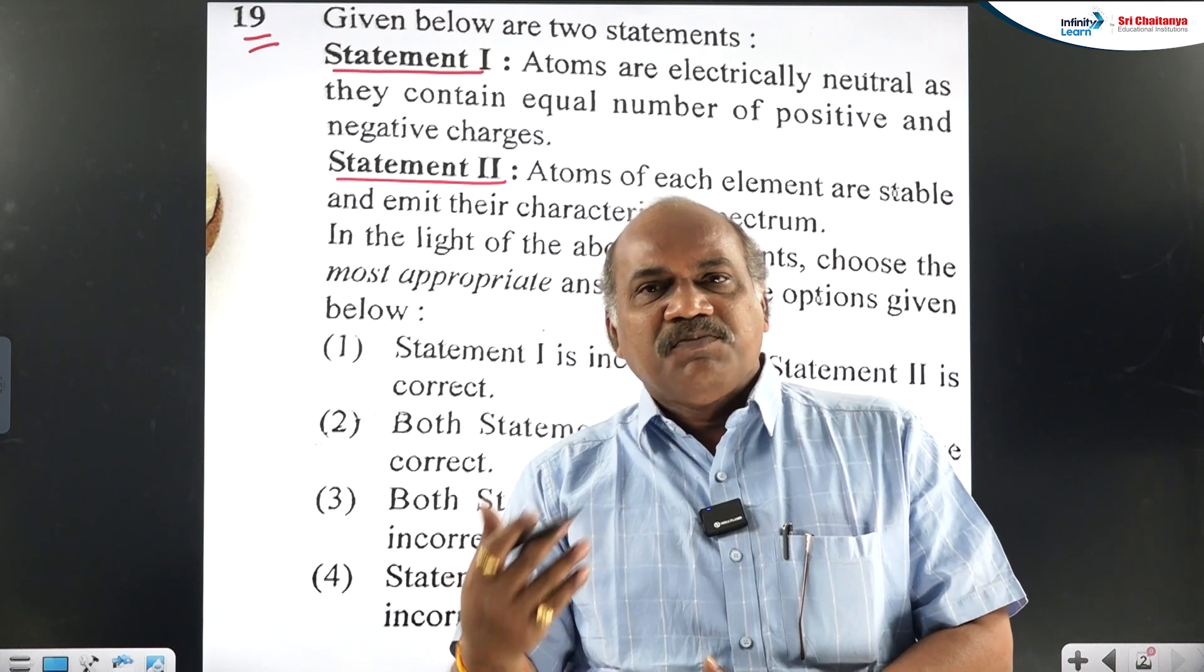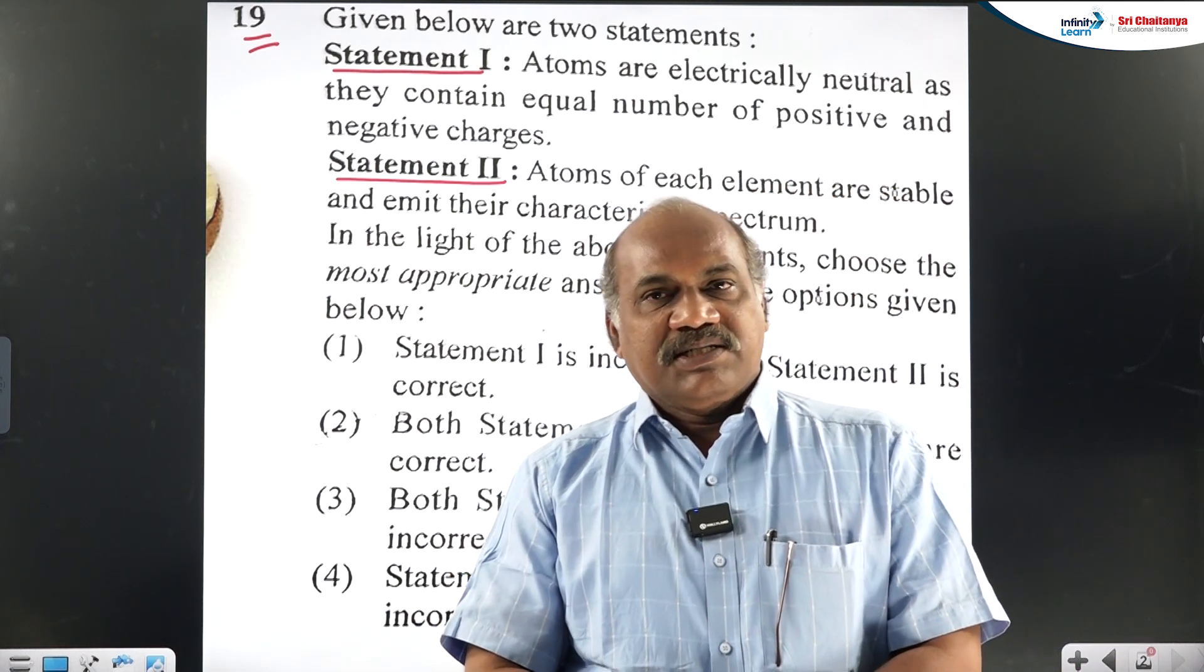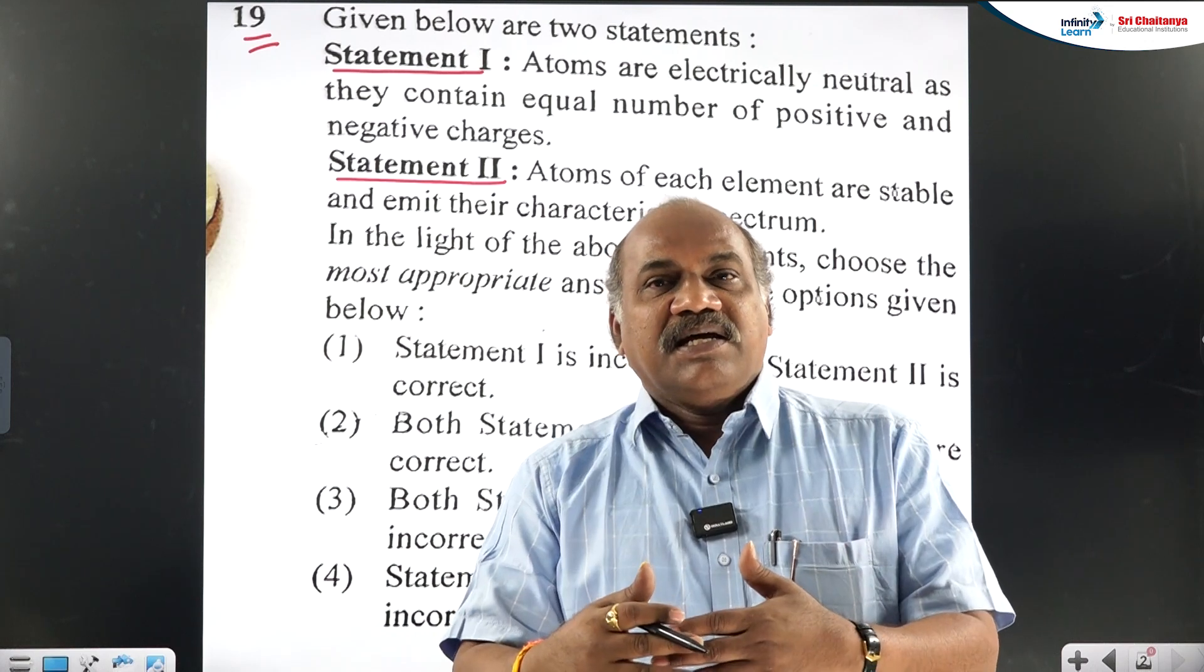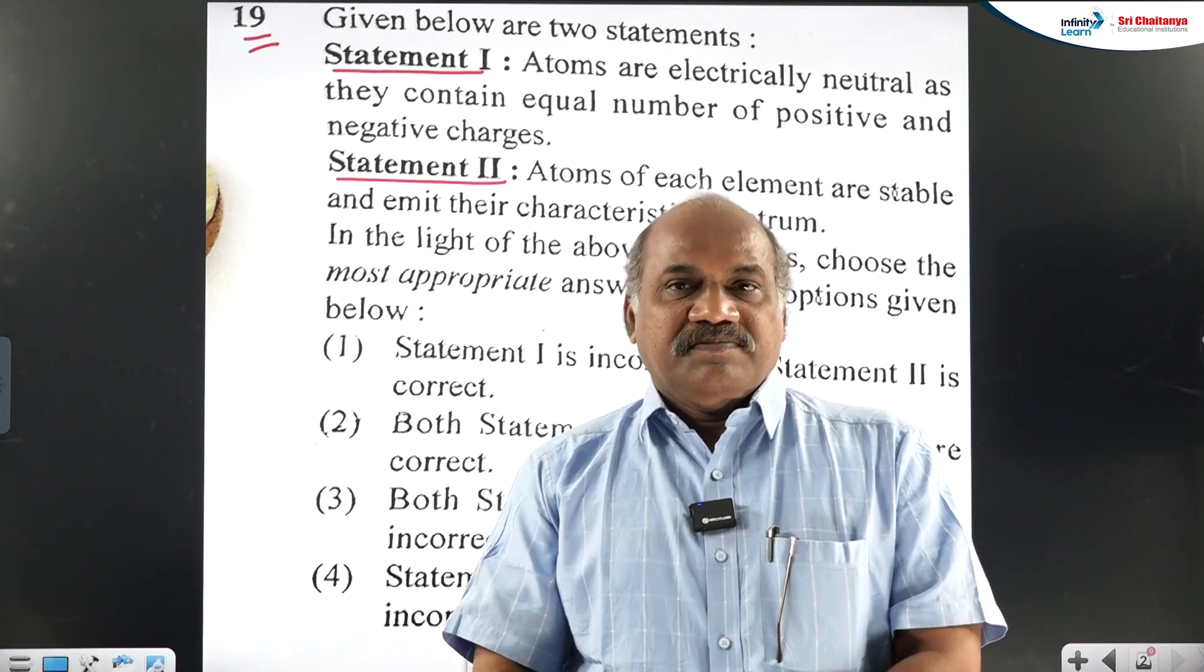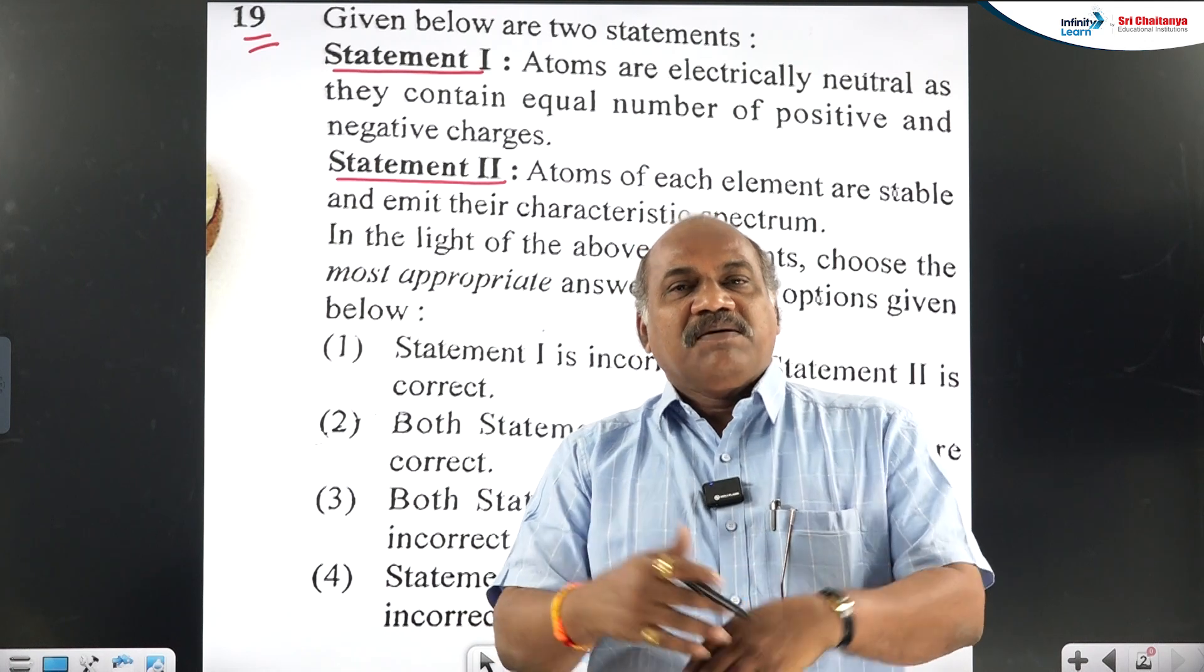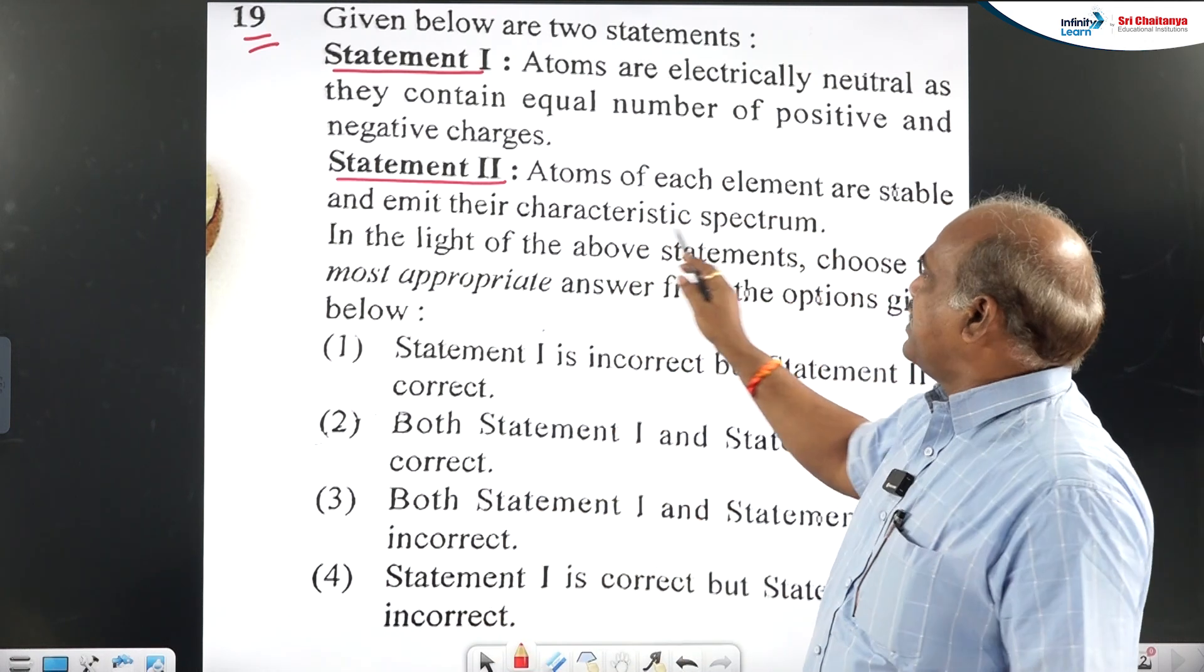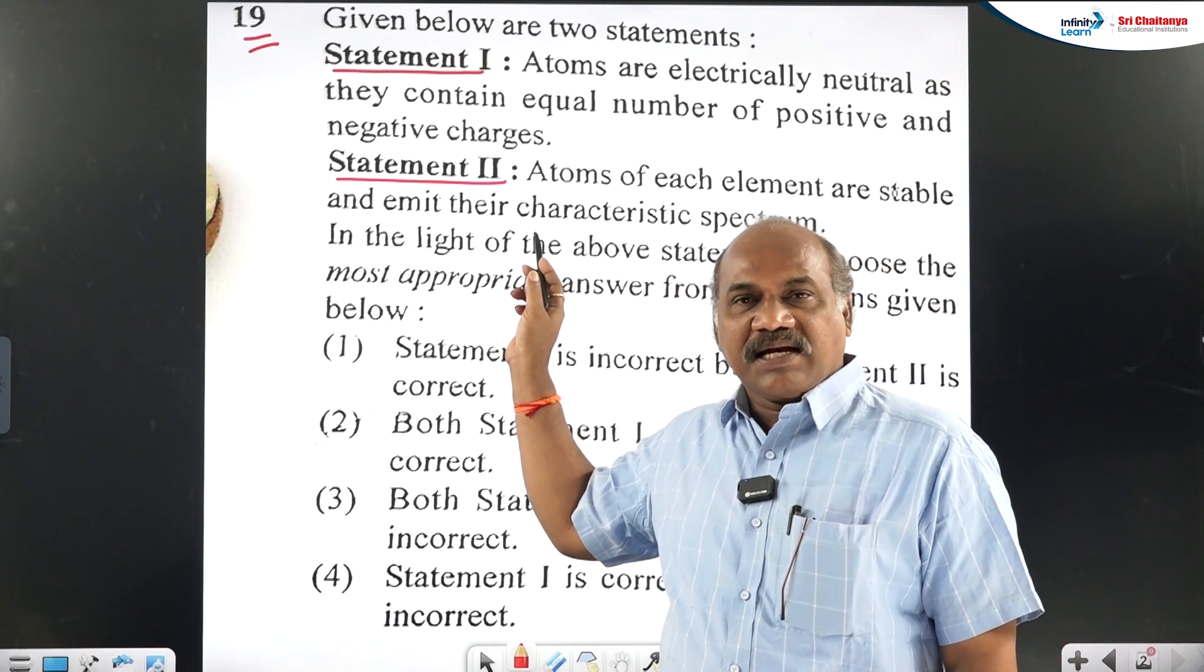Later, Niels Bohr, from his three postulates, Bohr's postulates, he successfully explained in what way the atom is stable. And based on Niels Bohr, that is the Bohr's theory, atoms are stable and they emit their characteristic spectrum.